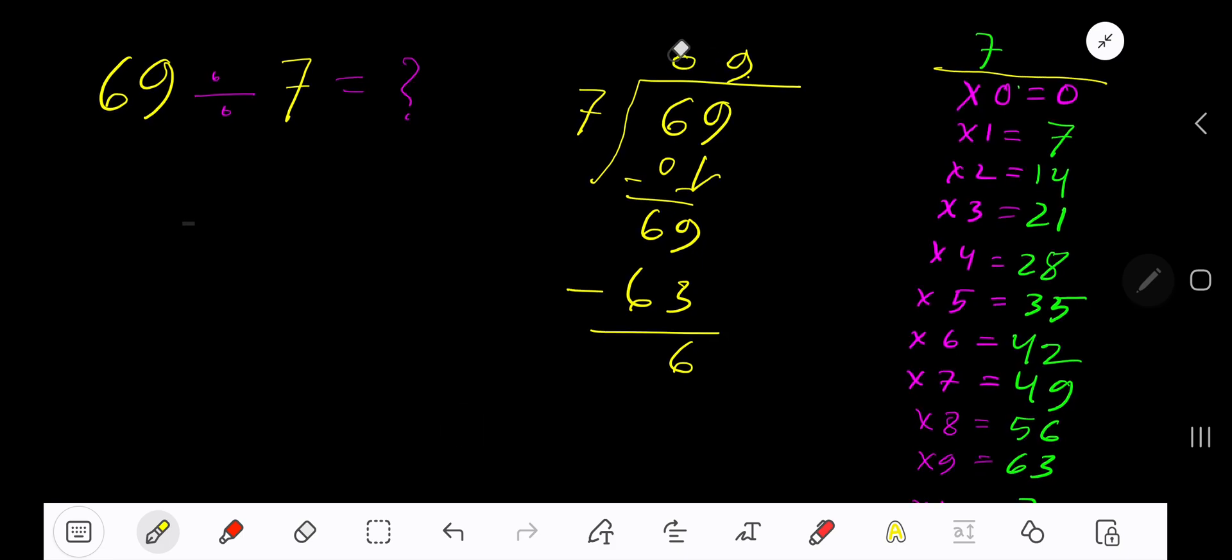So our answer is 09, means 9 remainder 6. If you want to write your answer in decimal form, then take your decimal.